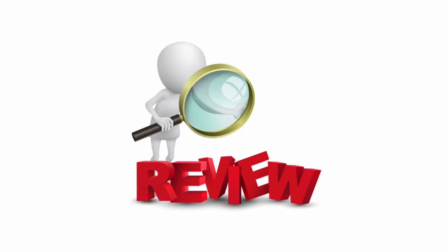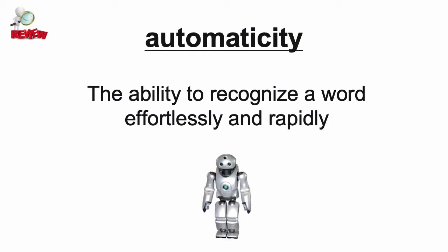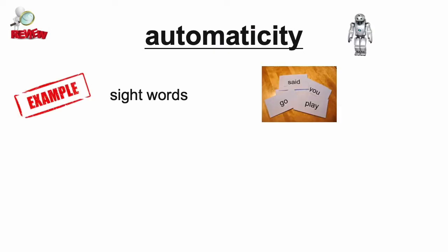Before we dive into new information, let's review some essential background knowledge from previous CAPs. Automaticity is the name for the ability to recognize a word effortlessly and rapidly. Words that you can recognize automatically are also called sight words.